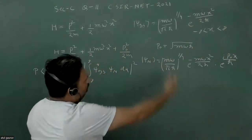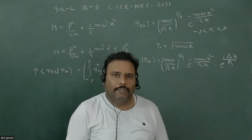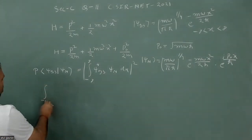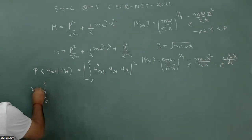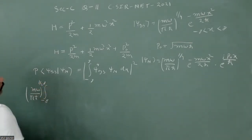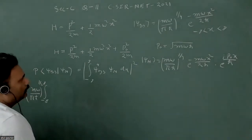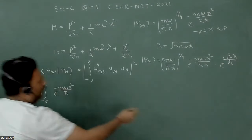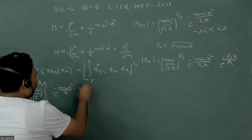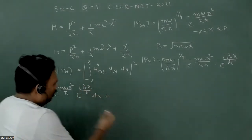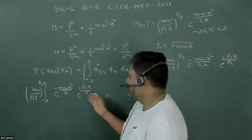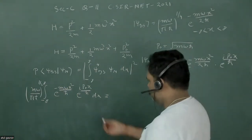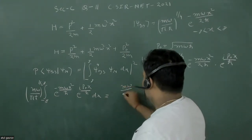We will use the concept of Gaussian wave functions to solve this integral. The integral from minus infinity to plus infinity gives (m omega / pi h-bar) to the power 1/2 — that is 1/4 from each state multiplied together — times e to the power minus m omega x squared upon h-bar, times the phase factor e to the power i p-naught x upon h-bar dx. We will complete the square to evaluate this.